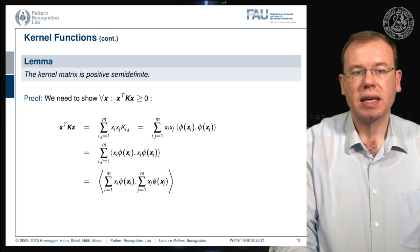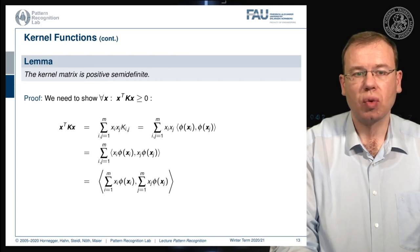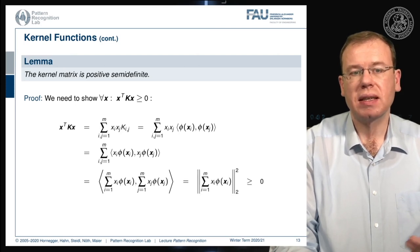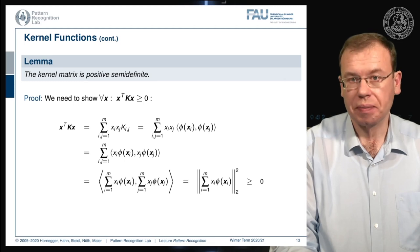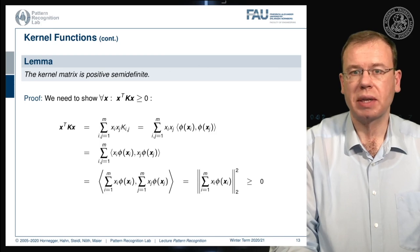You see here that the sum is a linear operation so I can also bring in the sum into the respective inner products. This is an inner product of the respective sums, essentially two times the same sum but with different indices, which then means that this can be rewritten as the average over x i times phi of x i. This is a two norm and the two norm is of course always greater or equal to zero. So we can easily show that this is really positive semidefinite.